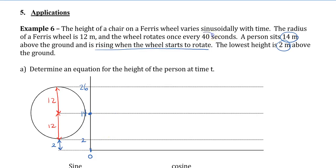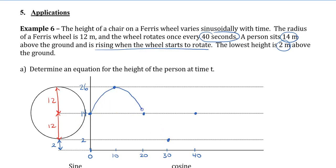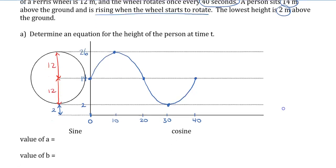We're going to plot some times. It takes 40 seconds to complete one rotation, so I'll plot 40 on the time axis, giving midpoints at 20, 10, and 30. At the 40-second mark, the person should be back where they started. A quarter of the way at 10 seconds they should be at the top. At the 20-second mark they should be back to the same height they started. Then they continue down to the 2-meter mark at 30 seconds. I'll connect the points to give a nice curve.